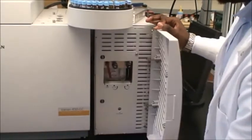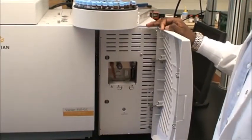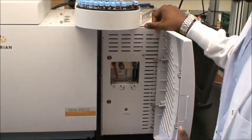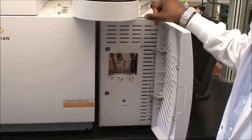On this side of the GCMS, we have the detector. This is a mass spec which is responsible for the spectrum that you'll see after your sample is analyzed.